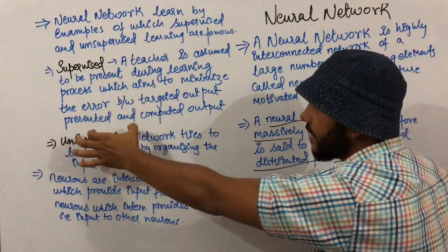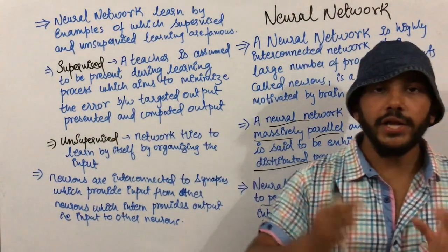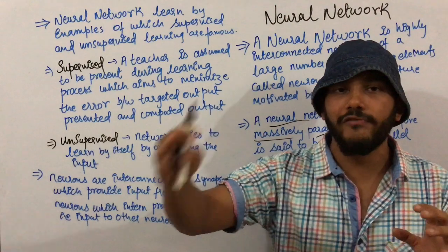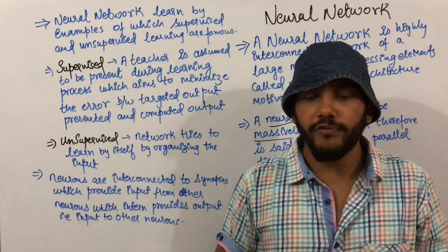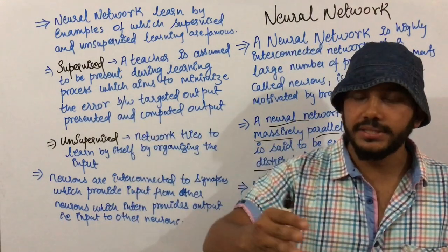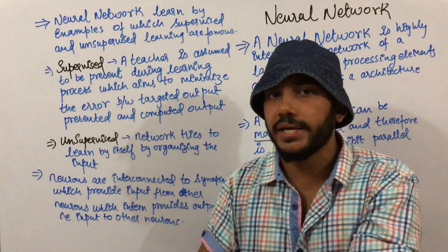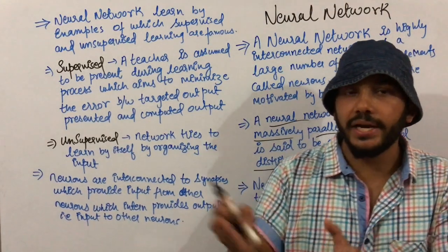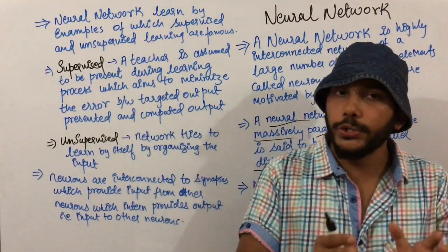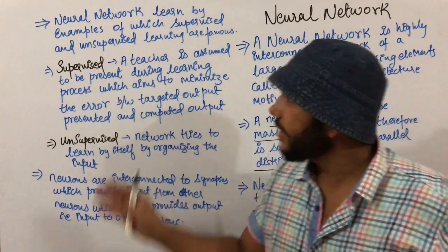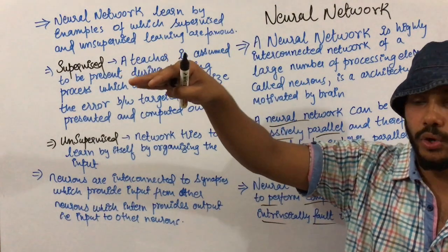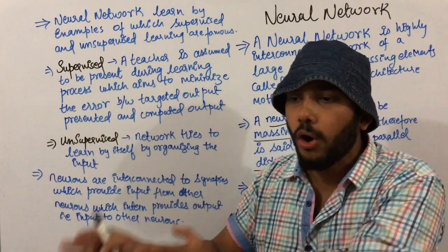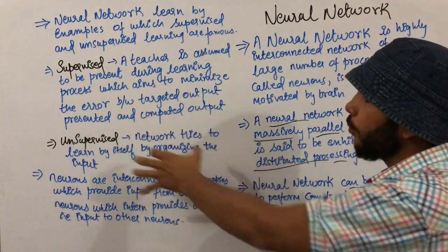In supervised learning, a teacher is assumed to be present during the learning process, which aims to minimize the error between the target output and the computed output. Your teacher is always present and, given sets of information and a calculated output, will tell you what the actual output should be. It compares and tries to minimize the error — saying your answer matches 50% or 100% with the actual answer. That is supervised learning.